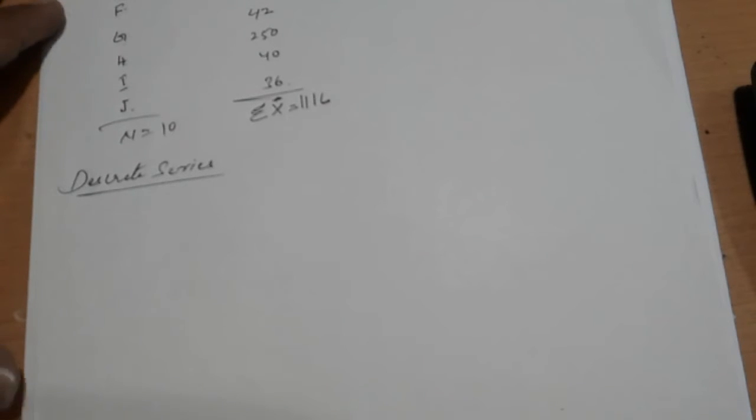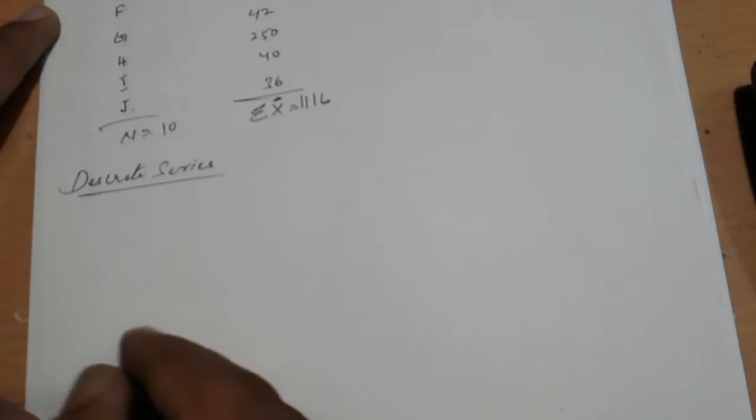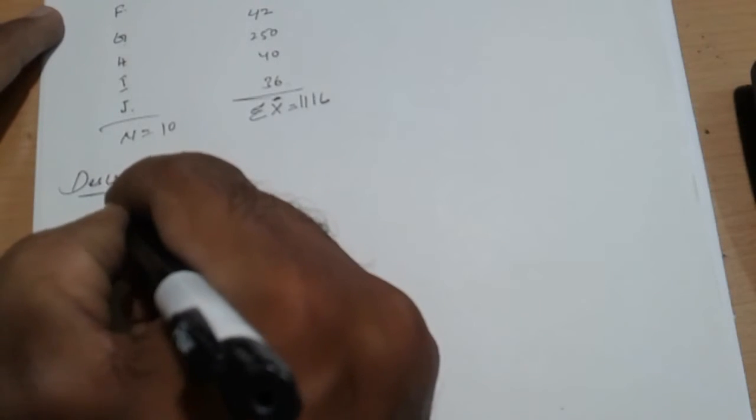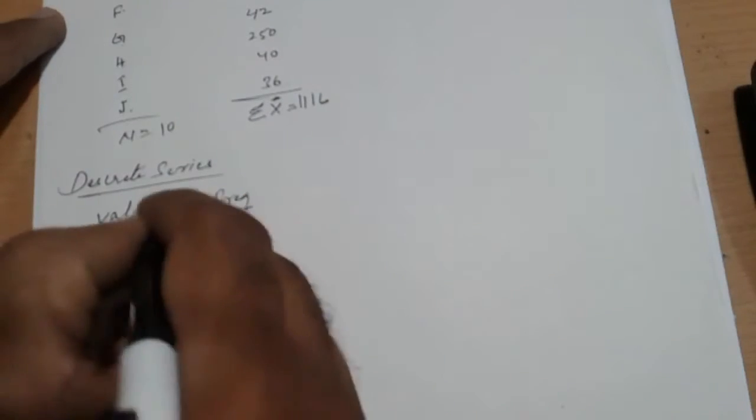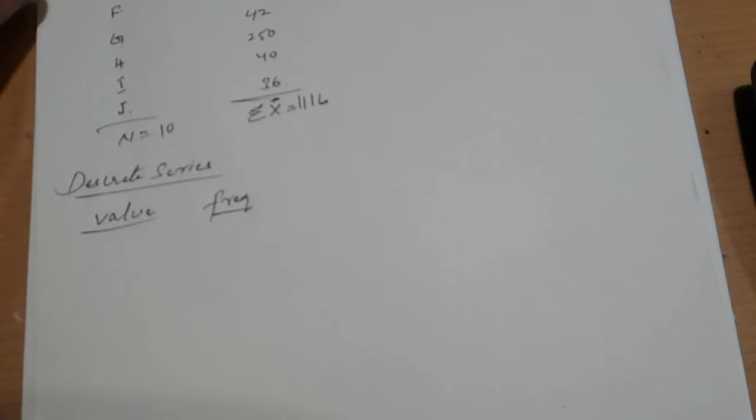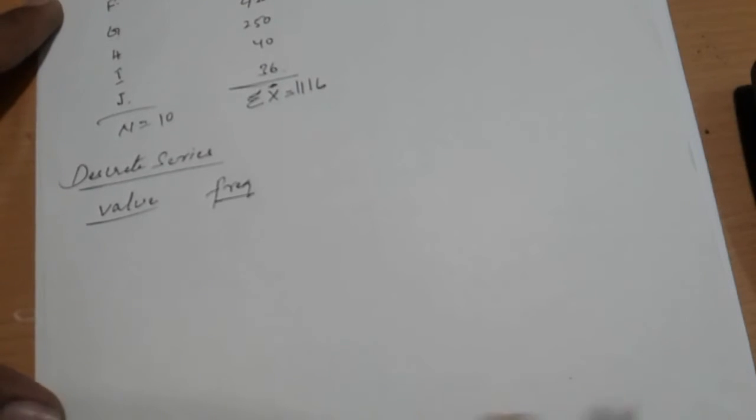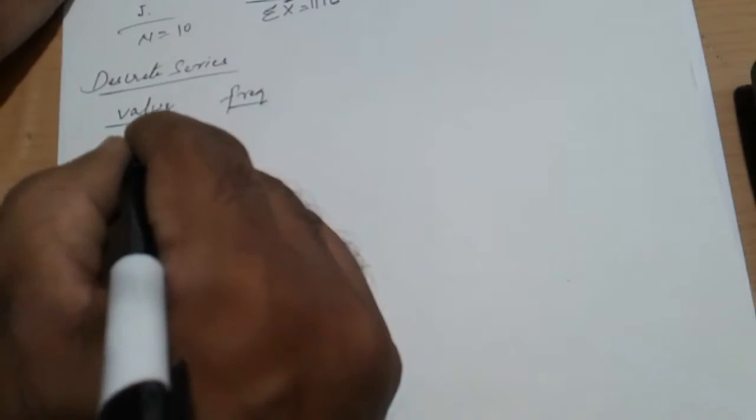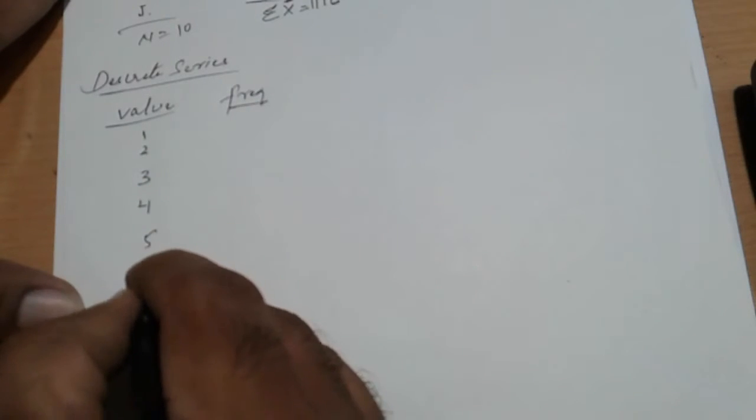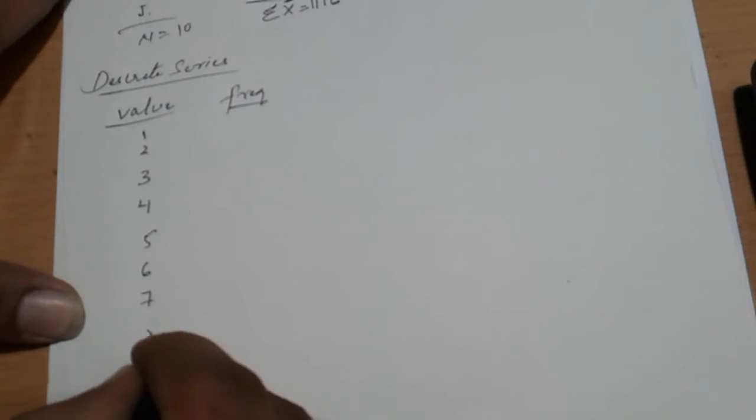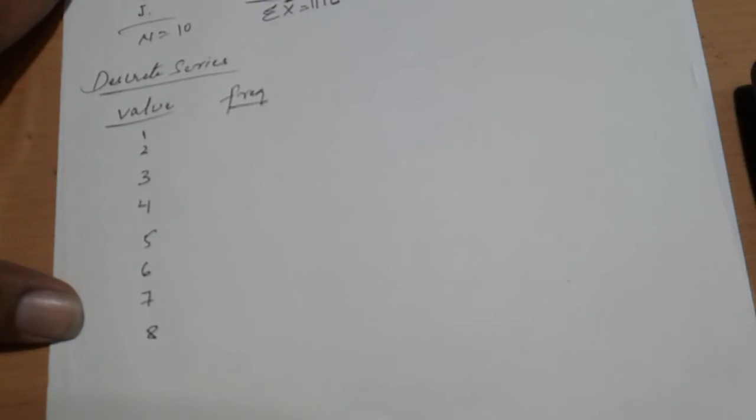Let's solve the question. The answer for discrete series solution. Value and frequency - you can understand discrete series by value and frequency. In discrete series, frequency is always given. Discrete and continuous. Value.